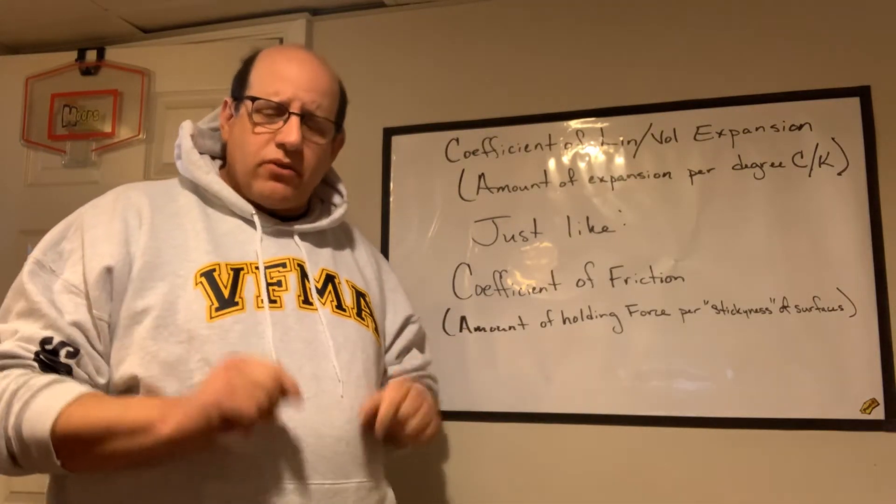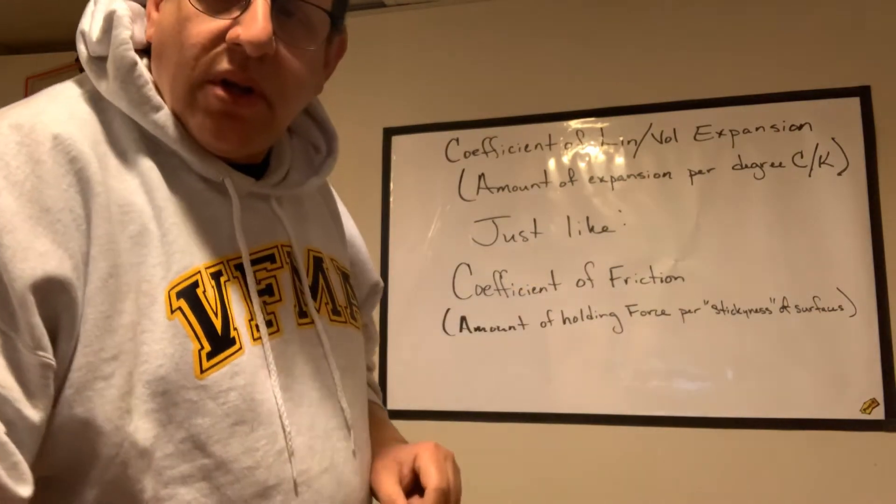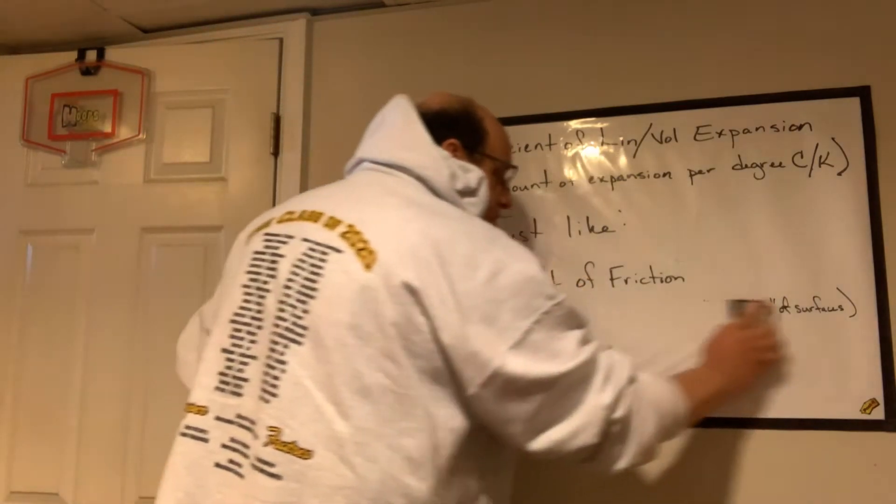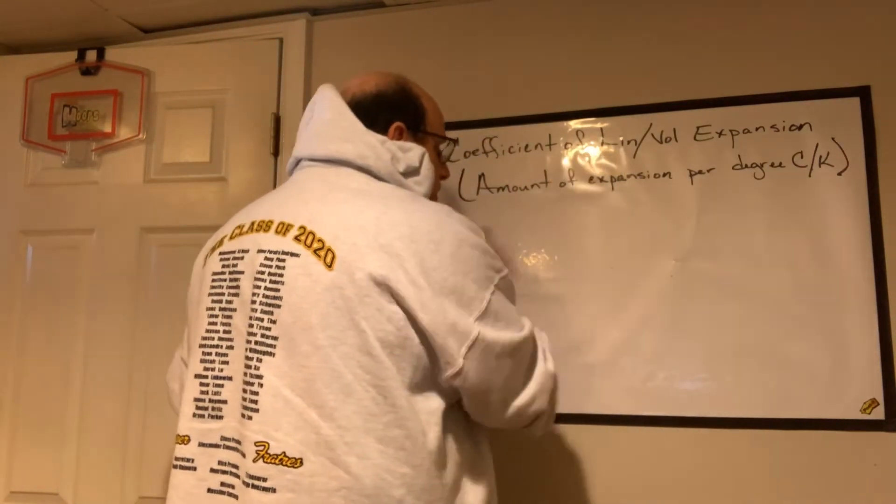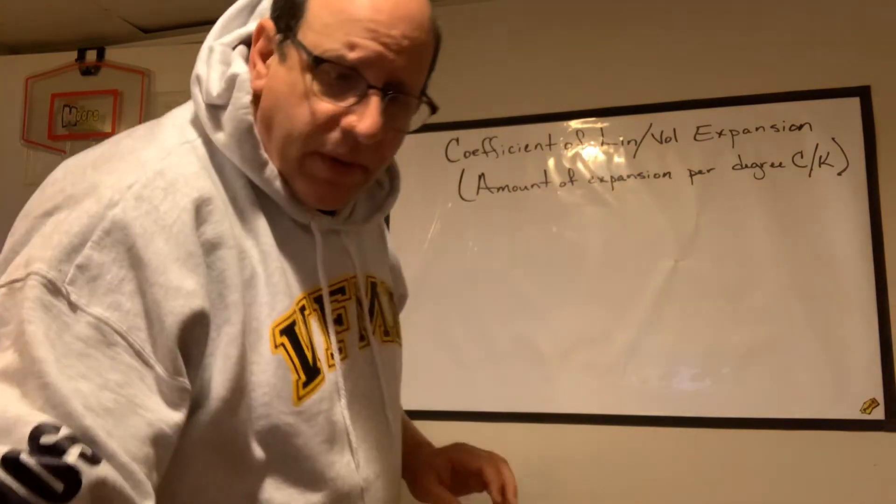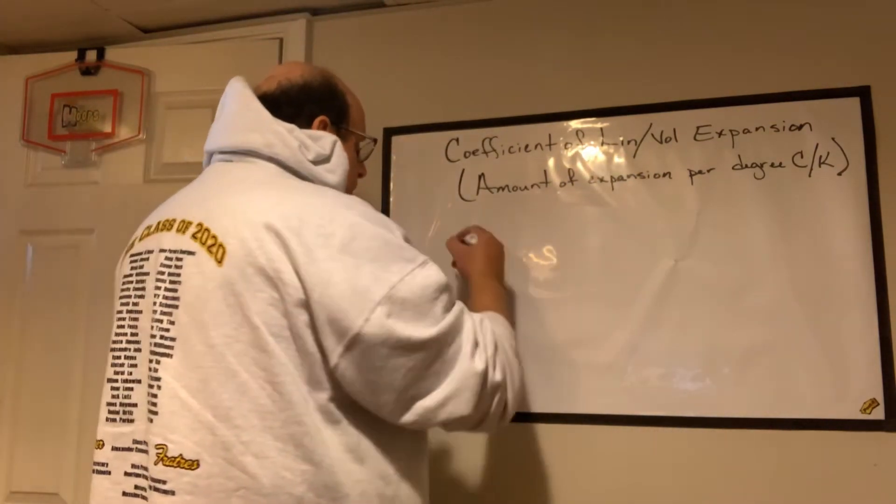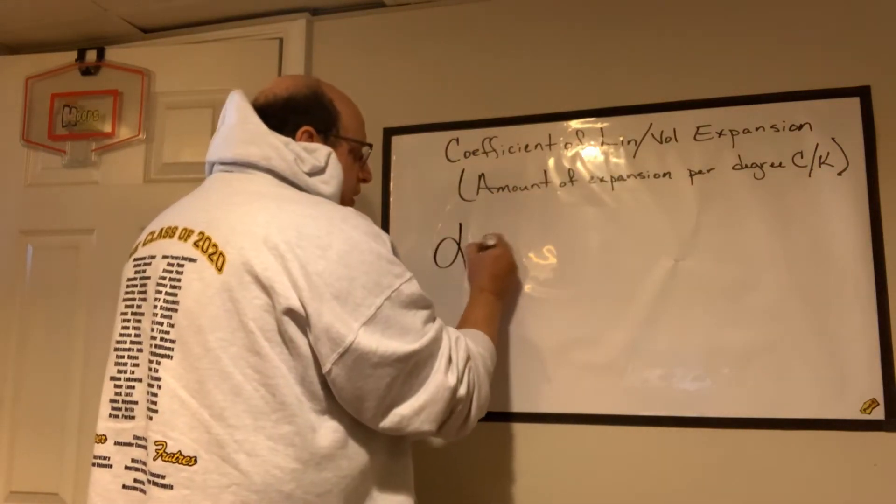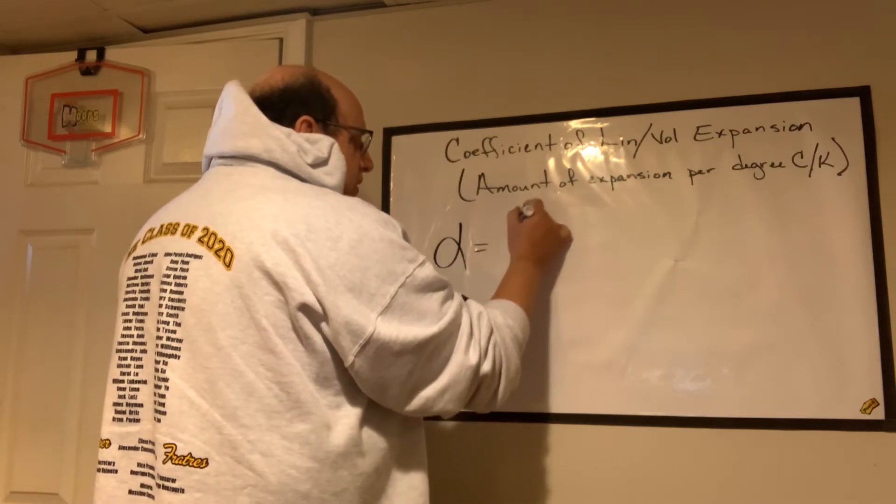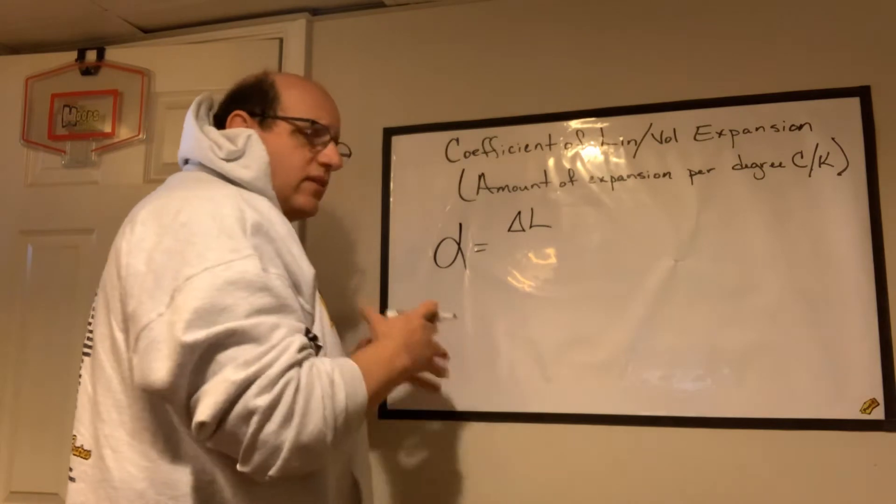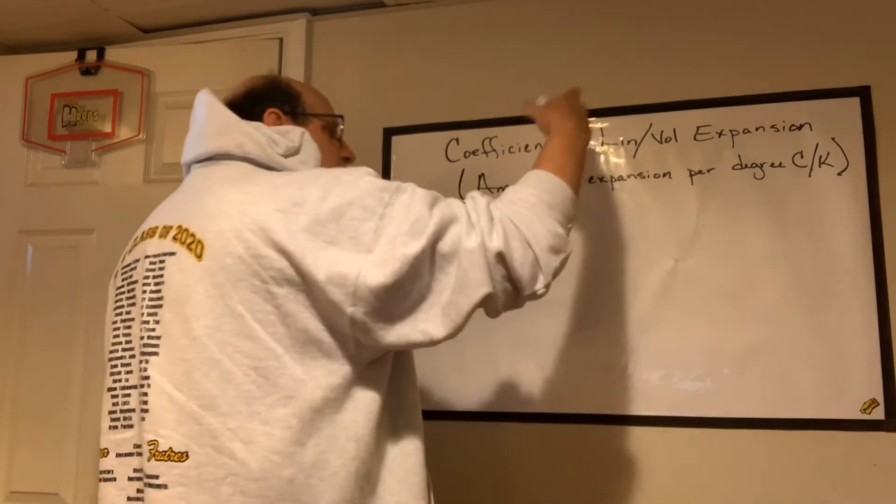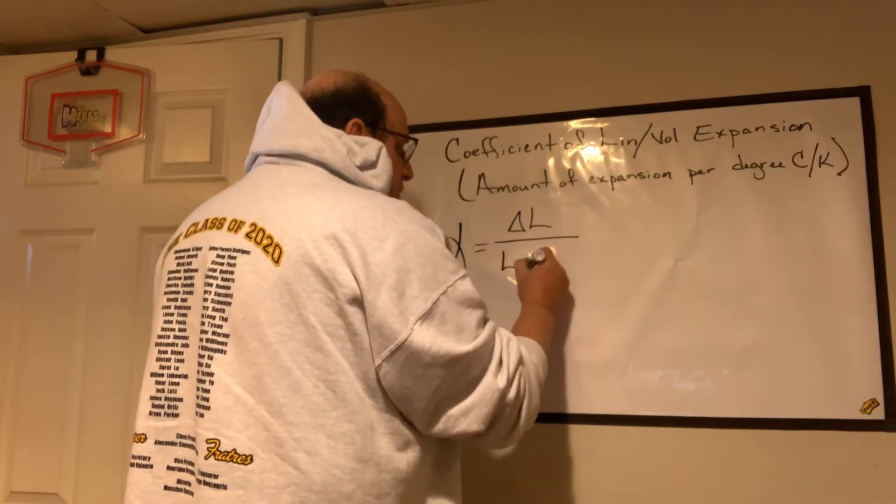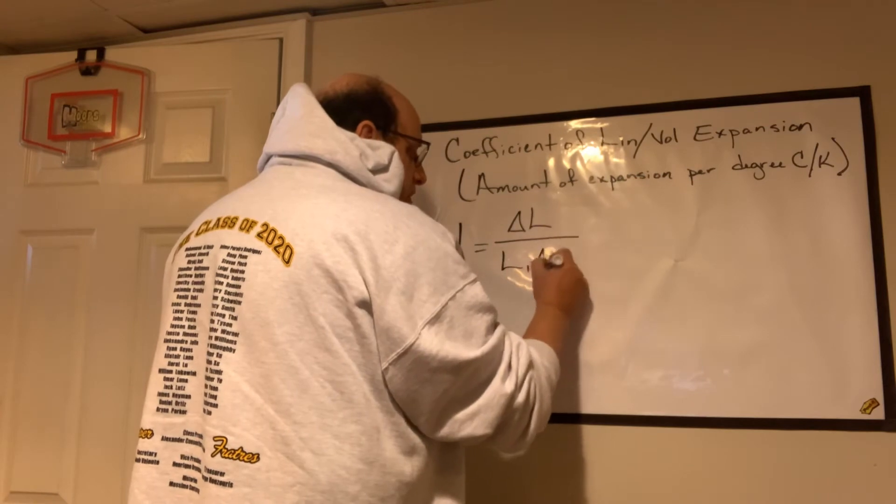I think the biggest trouble you're having is deciding which formula to use, and I'll show you real fast what these are like. We have alpha, which is the coefficient of linear expansion, and that's equal to the change in the length. That's the difference in the length. That's how much it's grown because of this coefficient, divided by the original length of the object times the change in temperature.